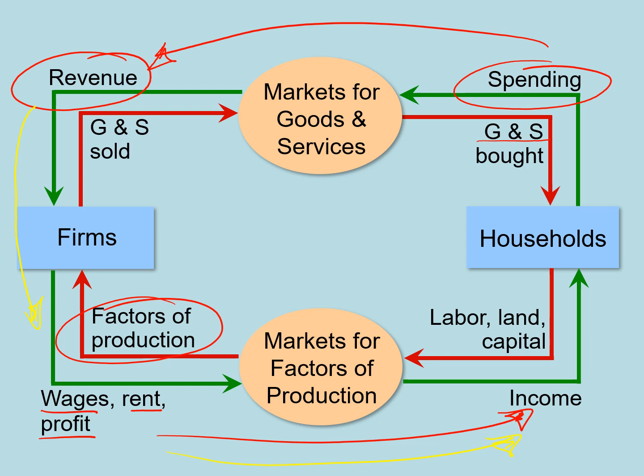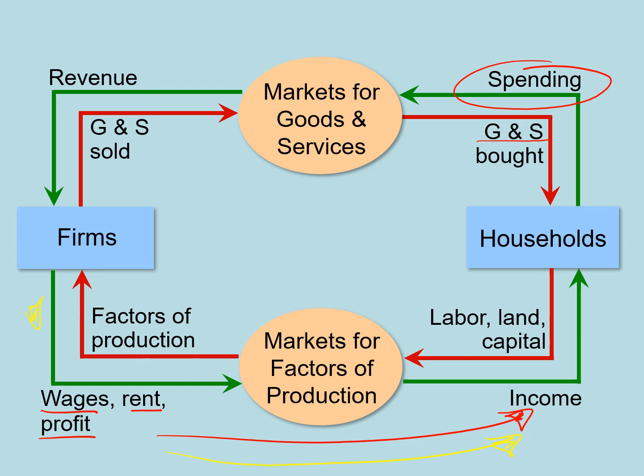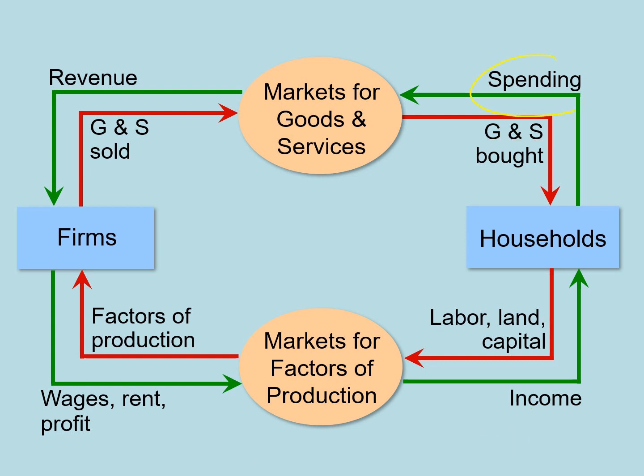Because this is a closed system, the circular flow of dollars can give us an idea of economic activity. We don't need to measure all of these. Looking at only one side — spending, for instance — will be enough to give us an idea of economic activity throughout the nation, because all the income of households is spending, and all the spending by households is revenue, and all the revenue earned by firms eventually is wages, rent, and profit that goes into households again. So let's focus on spending to measure economic activity and define GDP from that perspective.